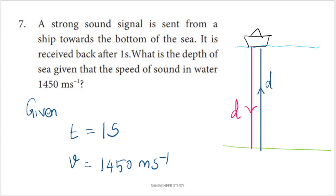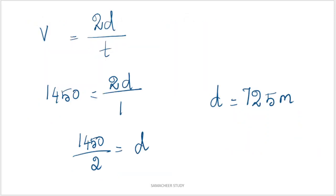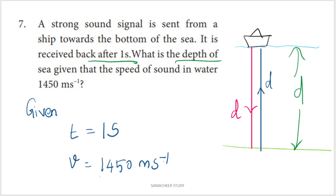Seventh question: A strong sound signal is sent from a ship towards the bottom of the sea. It is received back after 1 second. The speed of sound in water is 1450 meters per second. Using v = 2d/t: 1450 = 2d/1, so d = 1450/2 = 725 meters. The depth of the sea is 725 meters.